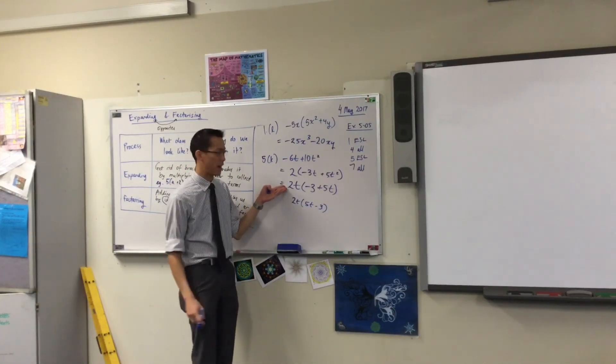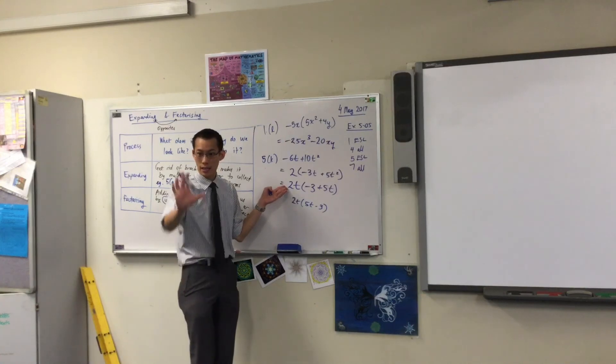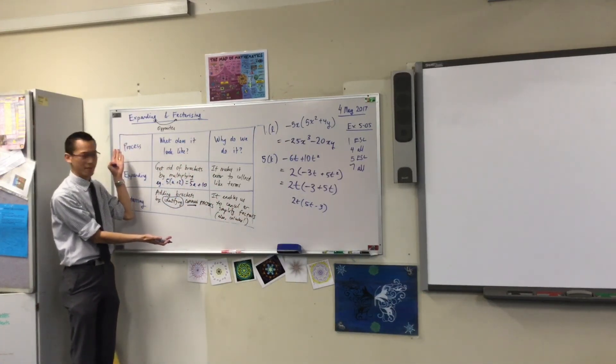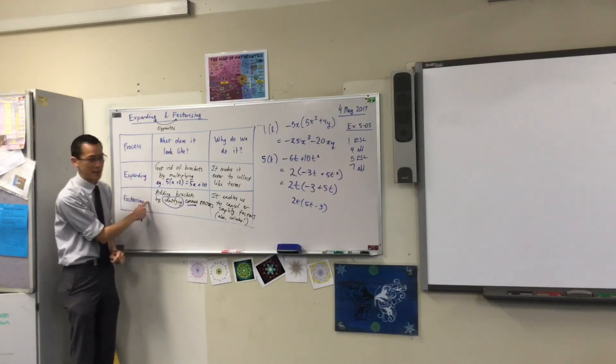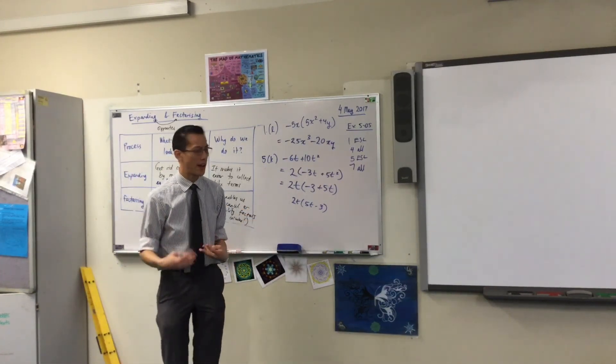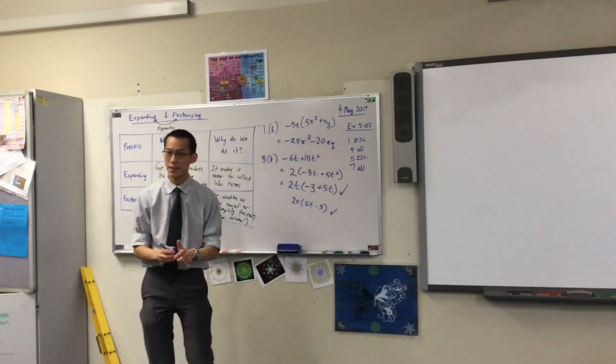I could leave it as 2t, and then just go 5t minus 3. There's not really any clear advantage to either of those. If you saw this answer in the back of the book, and you had this answer on your page, those are both fine. Here's why. What is this question about? It's about expanding and factorizing. These are both factorized to the same amount. If you're taking the same amount of stuff out. So both are great.